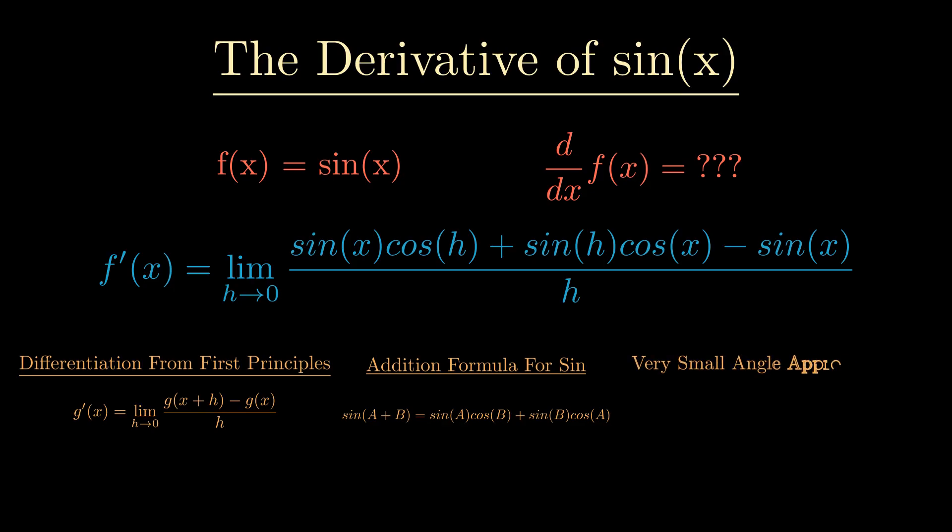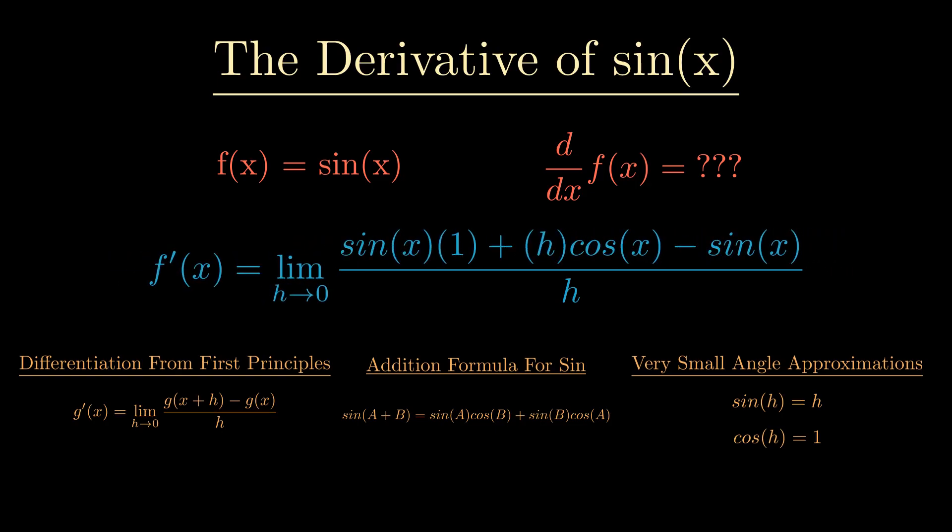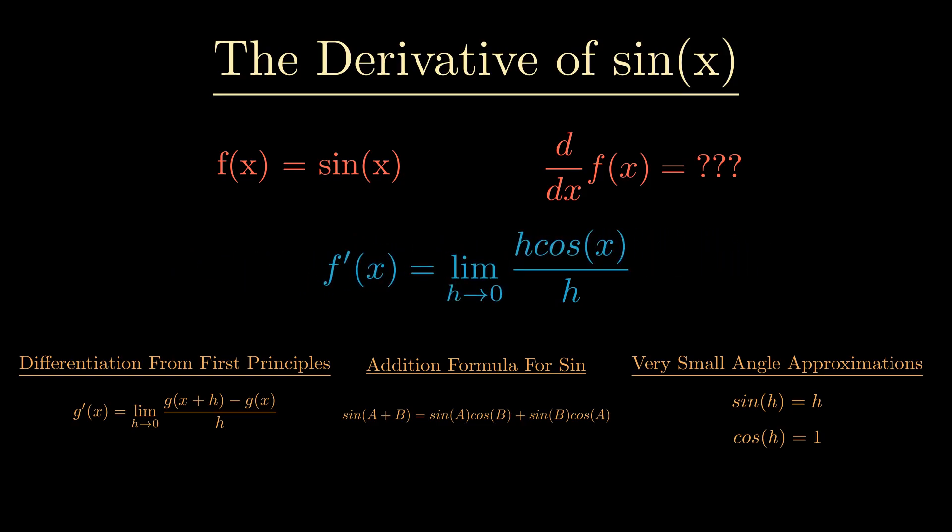We can now simplify our fraction by substituting our values for sin(h) and cos(h). Finally, by simplifying our sin(x) out we are left with h cos(x) over h. This now simplifies to just cos(x), therefore our derivative of sin(x) is cos(x).